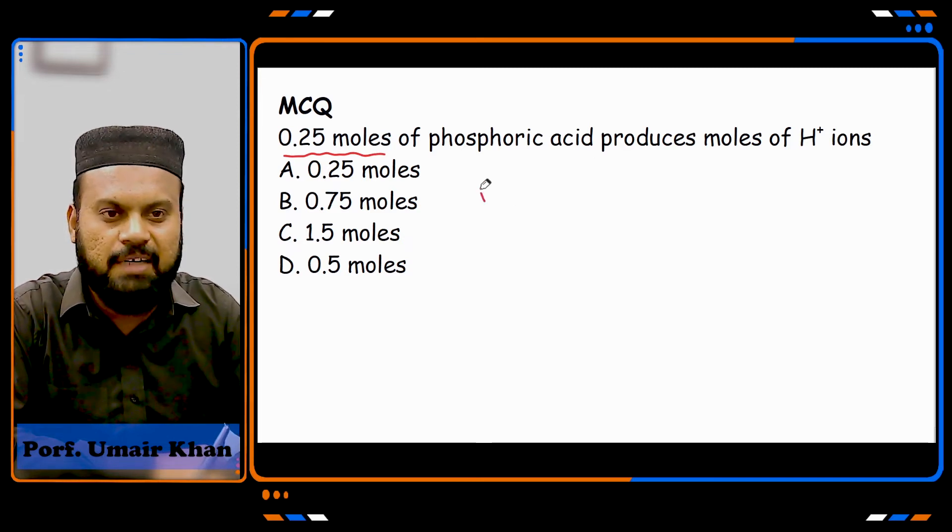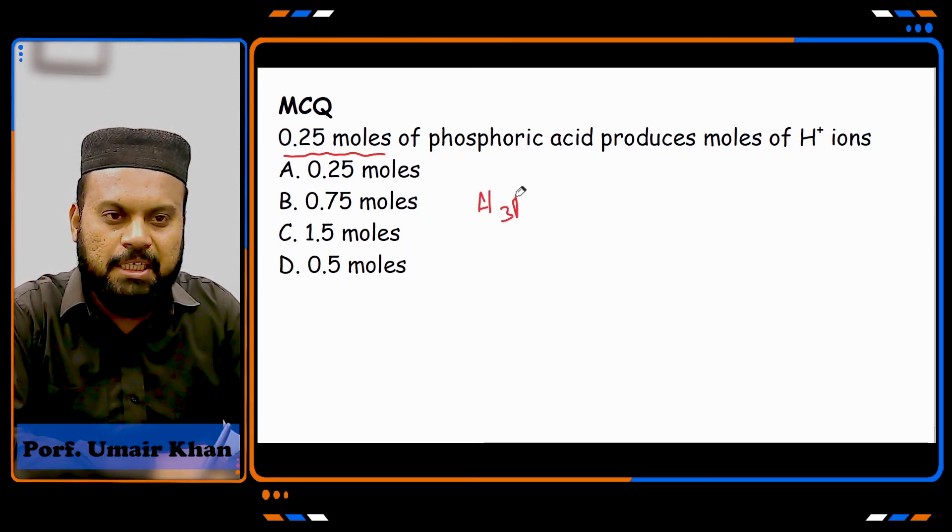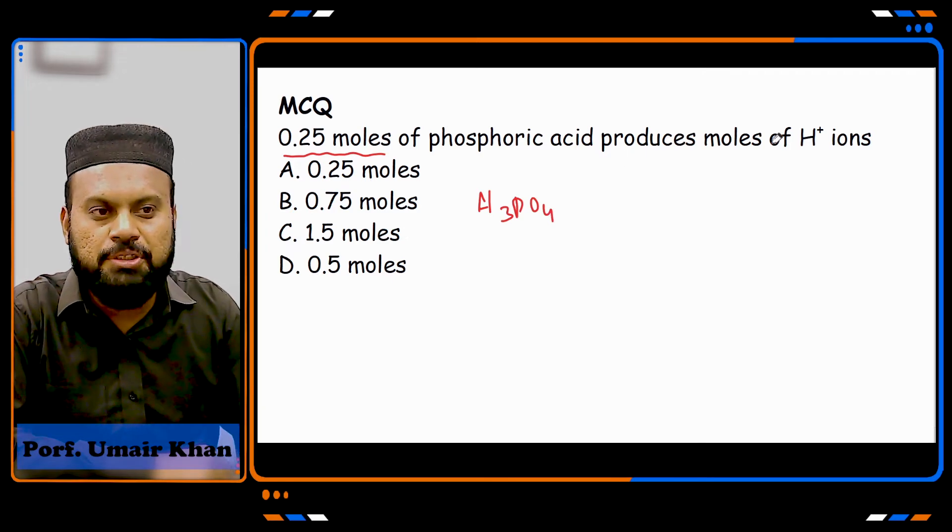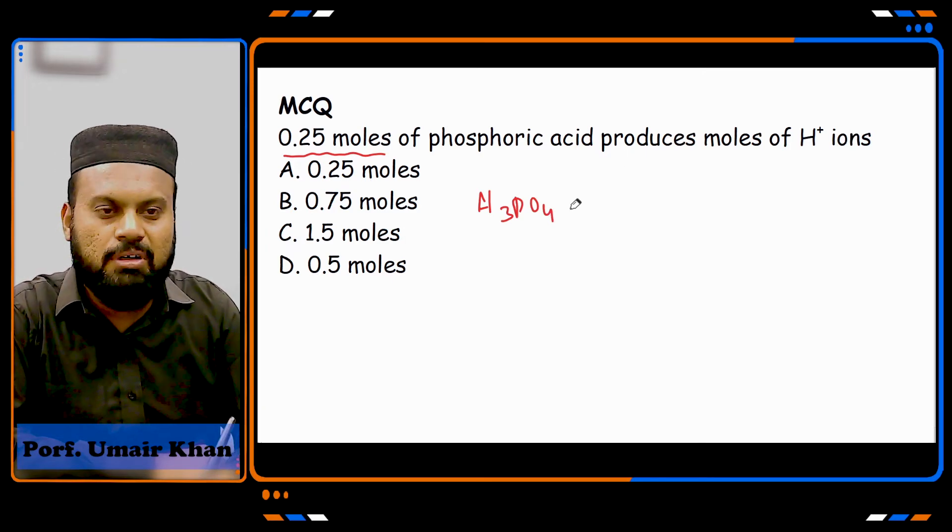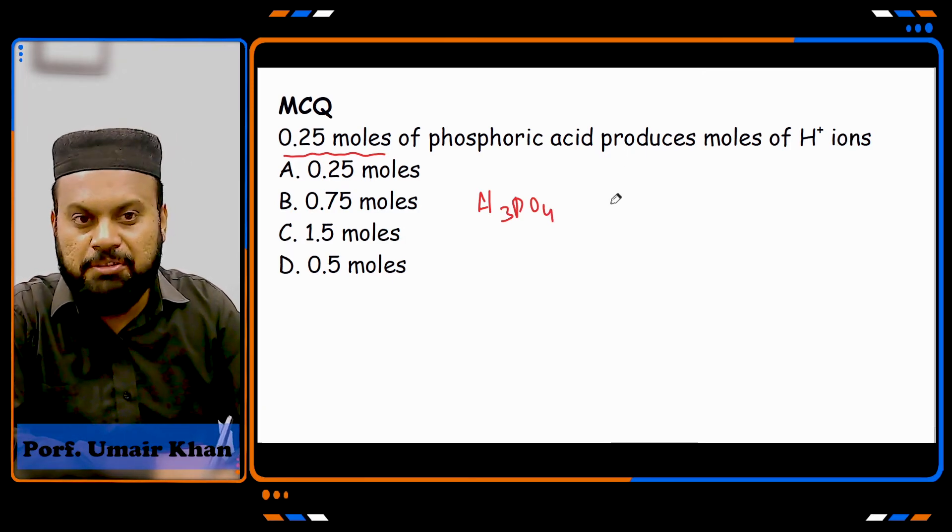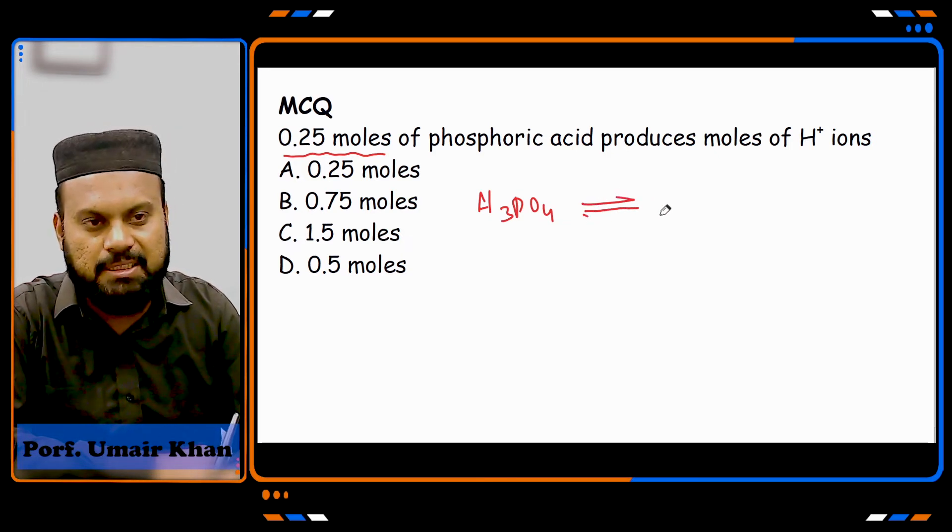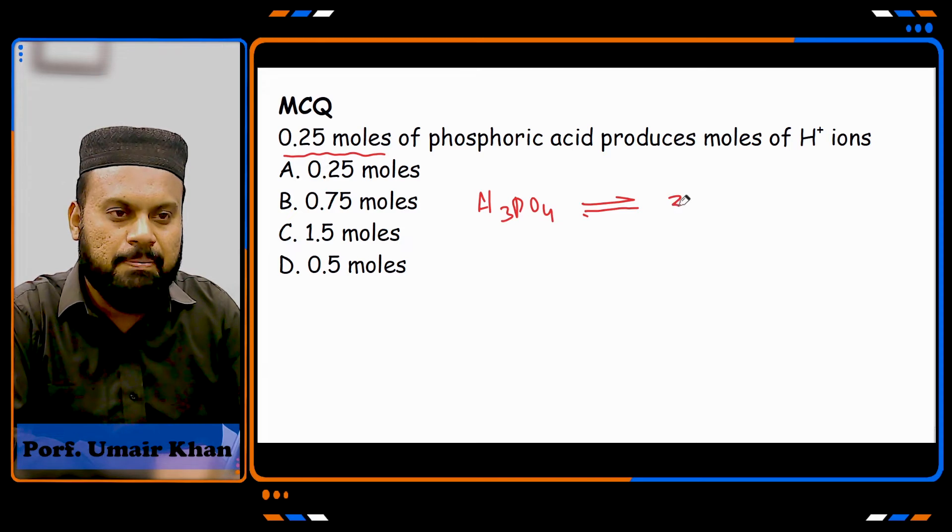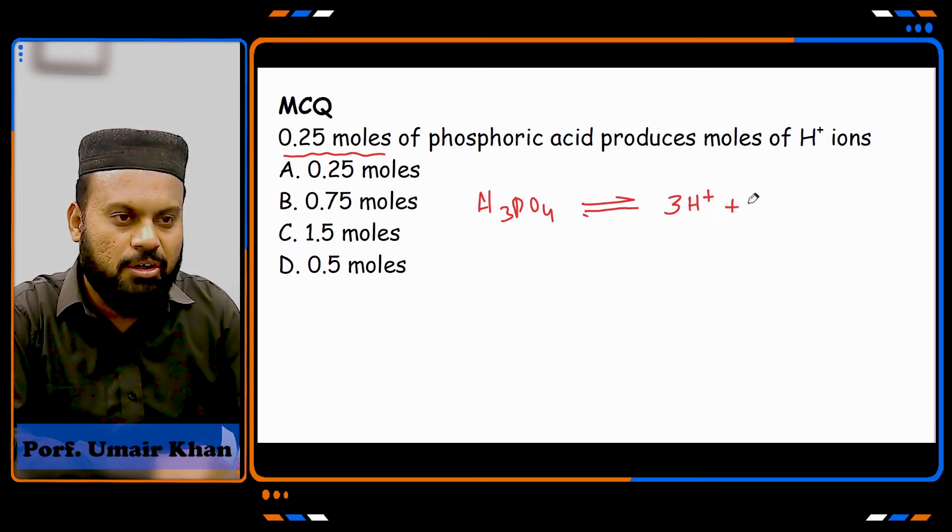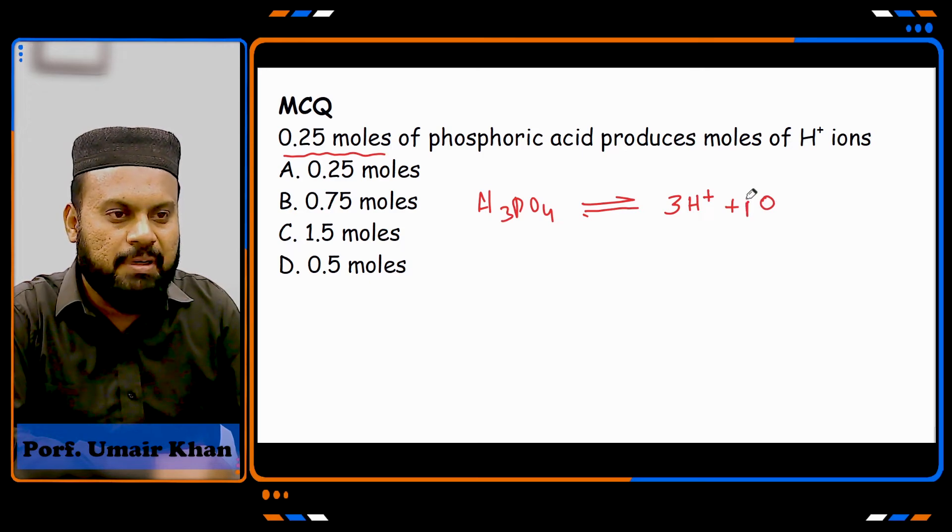If you see H3PO4, this formula should be H3PO4. This is a tribasic acid. It can be done in three steps, but I'm doing it in one step. If it fully ionizes, then it will give 3 H+ ions and PO4 will be saved.